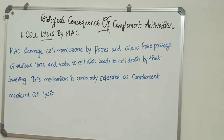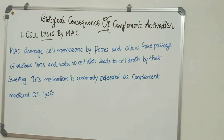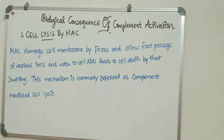Number 1: Cell Lysis by Membrane Attack Complex, or MAC. MAC damages the cell membrane by forming pores, allowing free passage of various ions and water into the cell. When various ions and water enter through these pores, this leads to cell death by swelling and lysis. This mechanism is commonly referred to as complement-mediated cell lysis.